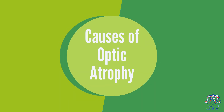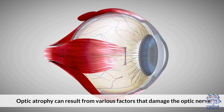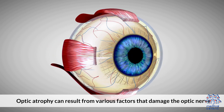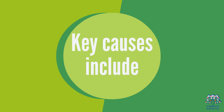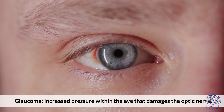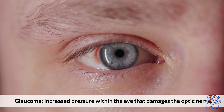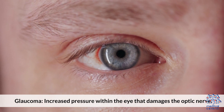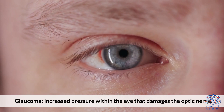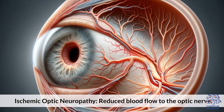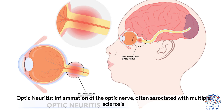Causes of Optic Atrophy. Optic atrophy can result from various factors that damage the optic nerve. Key causes include: 1. Glaucoma — increased pressure within the eye that damages the optic nerve. 2. Ischemic Optic Neuropathy — reduced blood flow to the optic nerve.